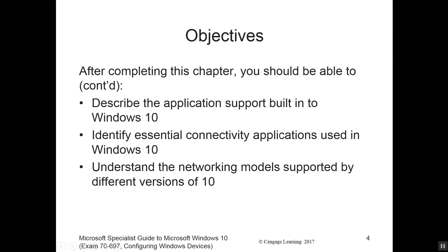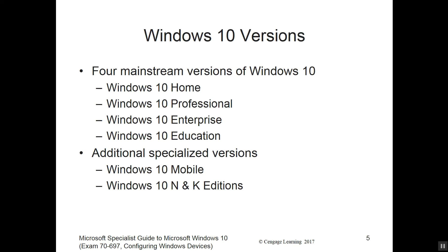We do have several different versions now. There are four mainstream versions: Win 10 Home, Win 10 Professional, Win 10 Enterprise, and Win 10 Education. That's primarily what we'll see. But there are also two specialized versions: Win 10 Mobile, and Win 10 N and K Editions.